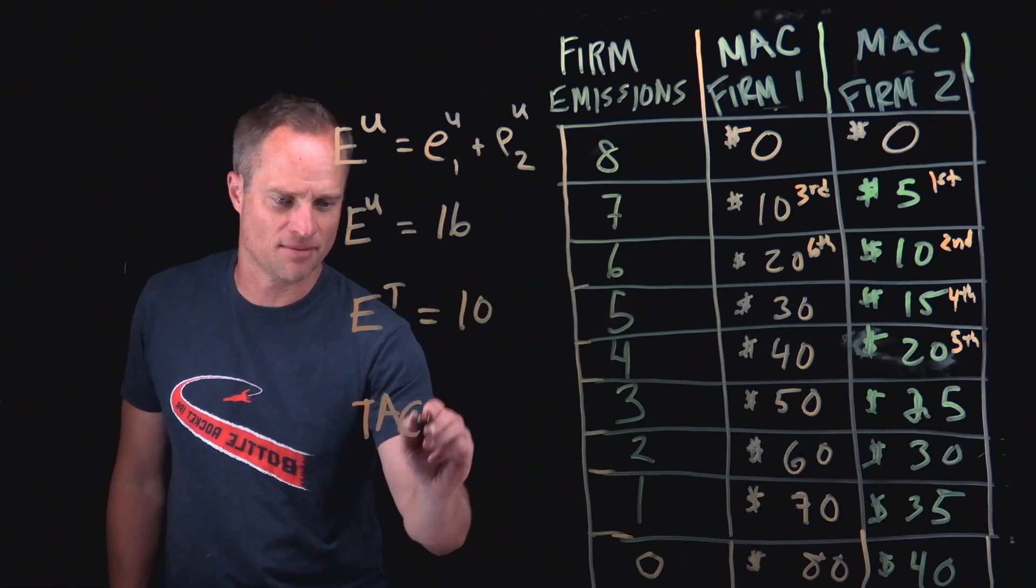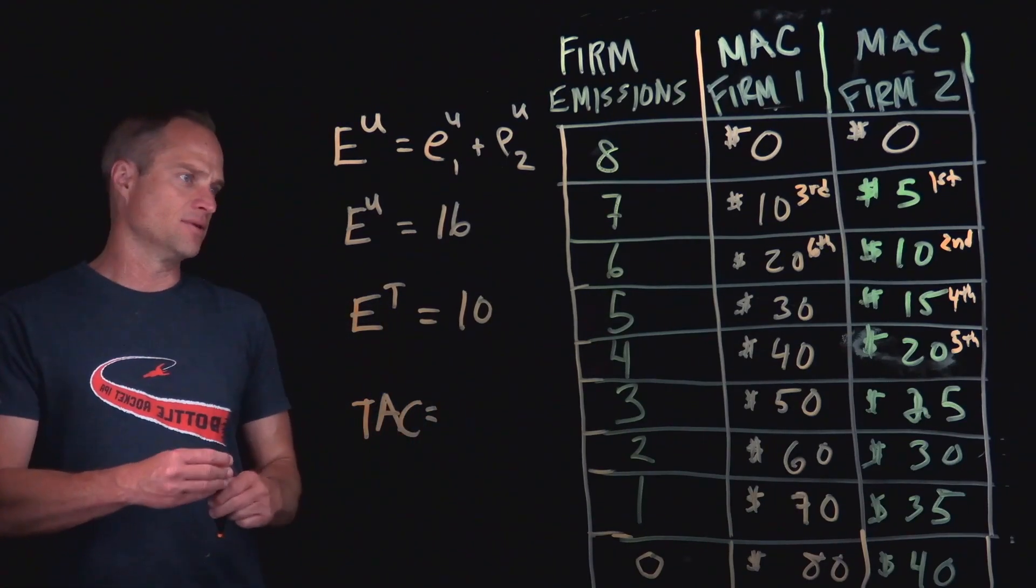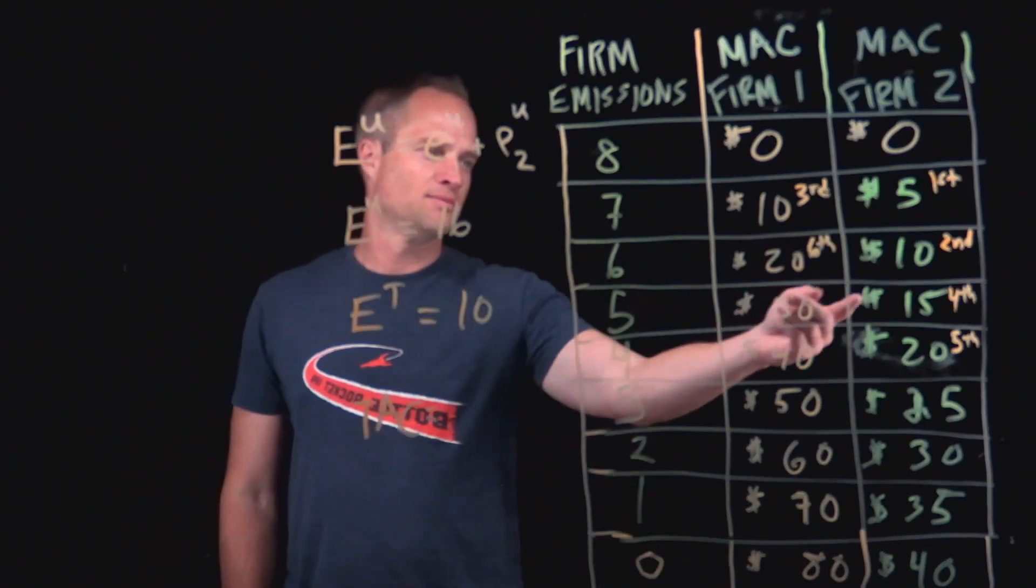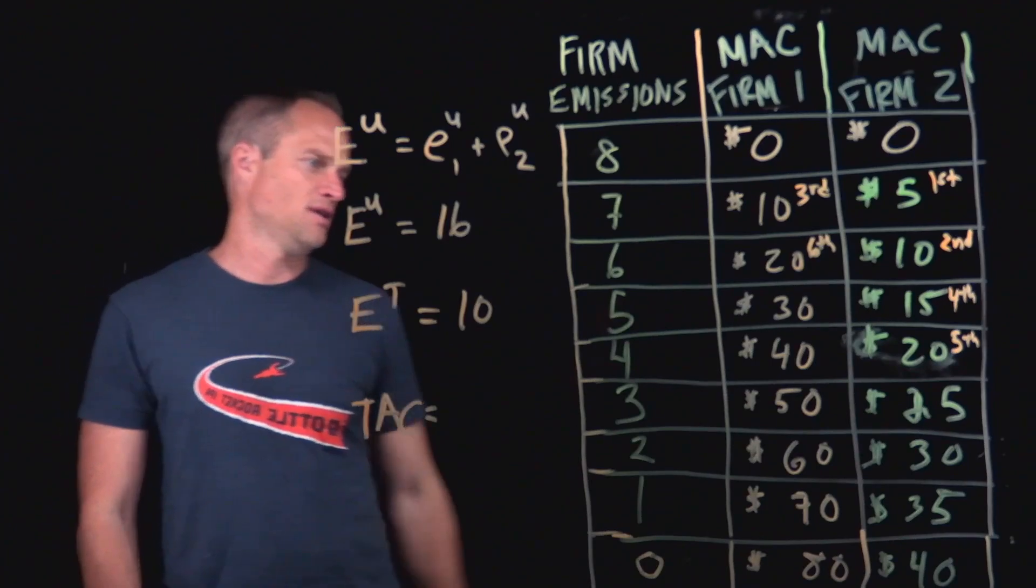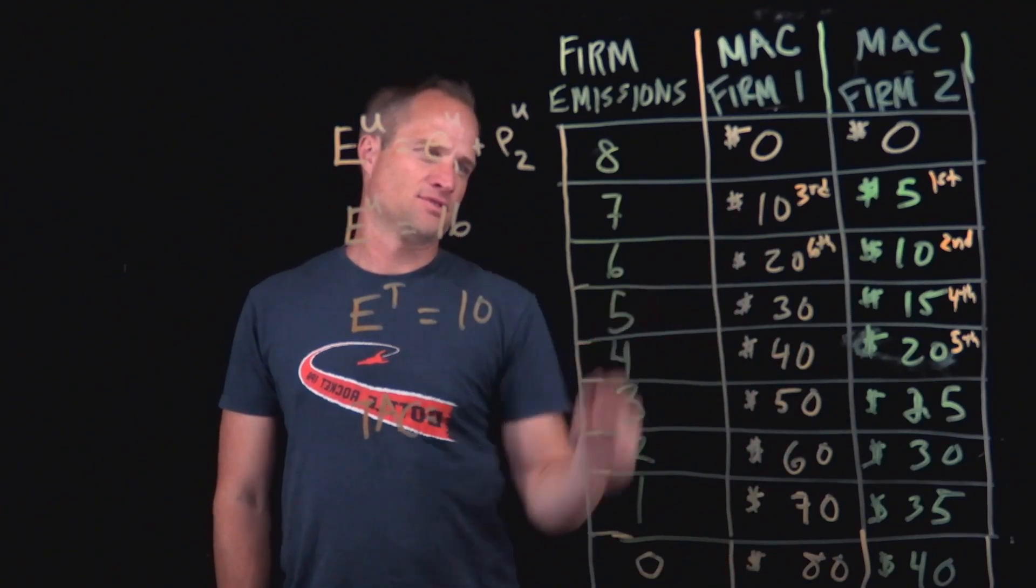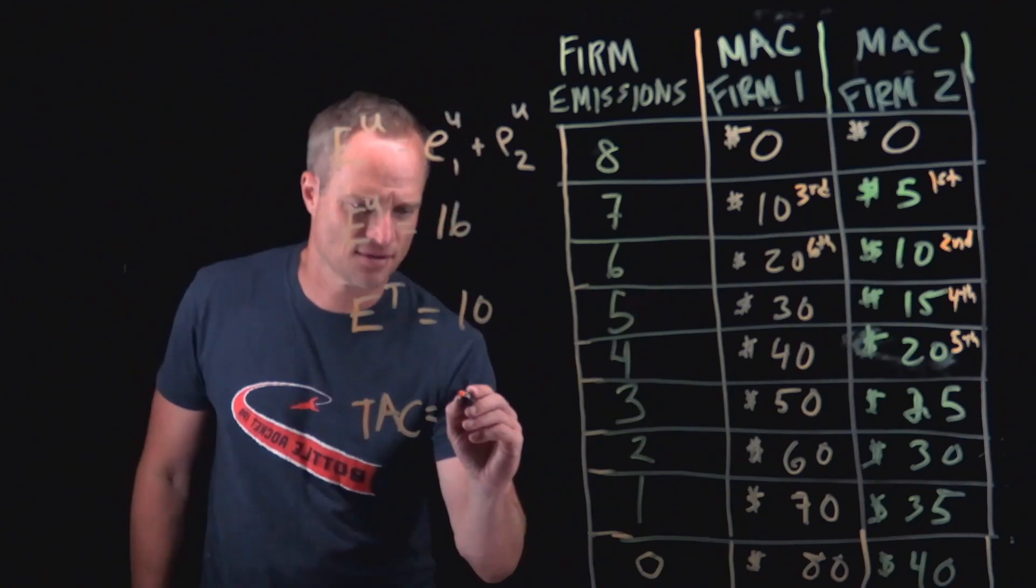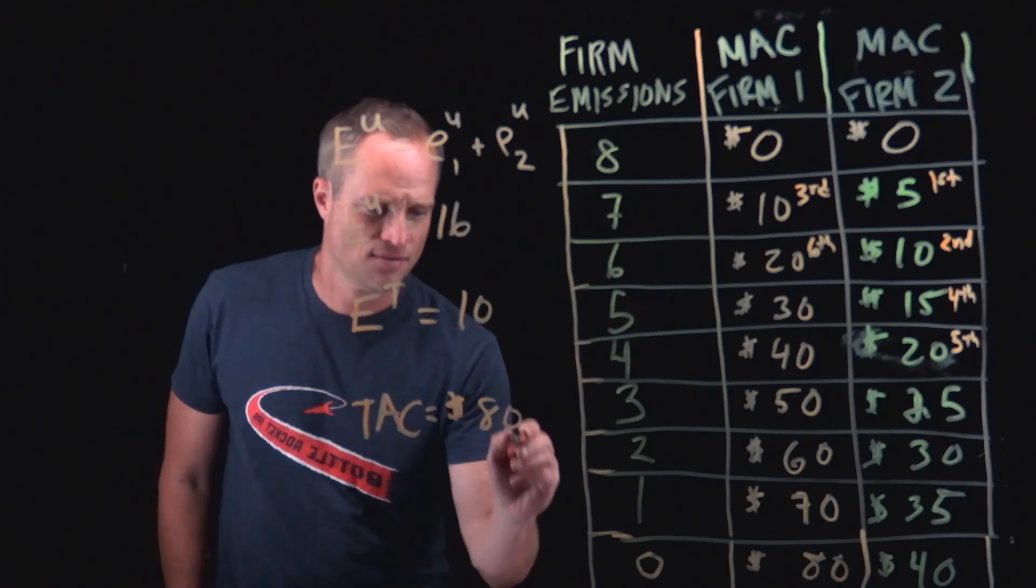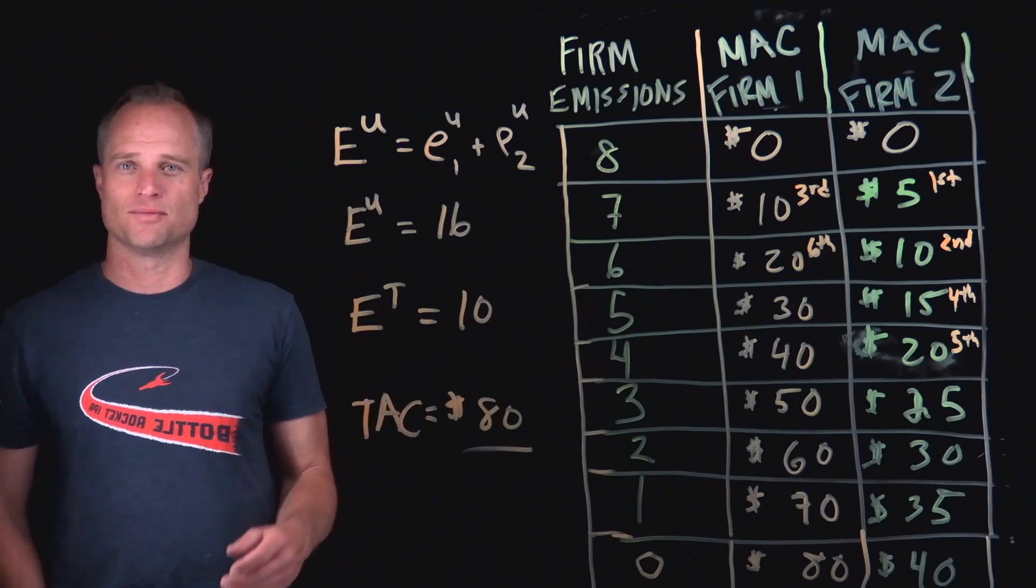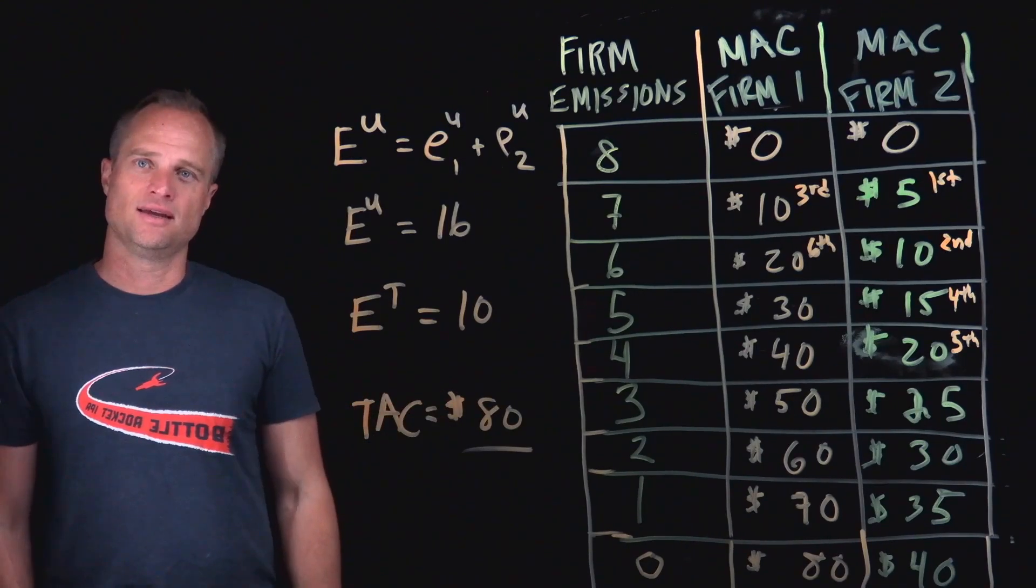You're going to pop in the total abatement cost. That's just going to be manually the cumulative, right? So five plus 10 is 15, plus 15 is 30, plus 20 would be 50, 60 plus 20 would be 80. So in total, the cheapest way to abate the six units of emissions would cost a combined $80.